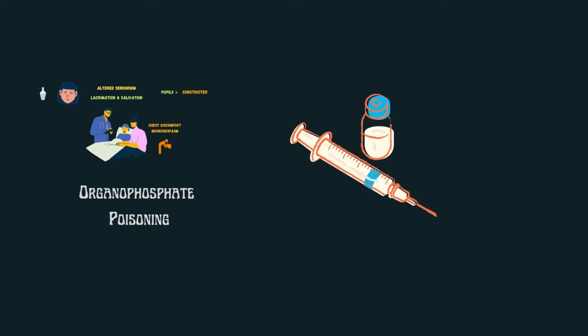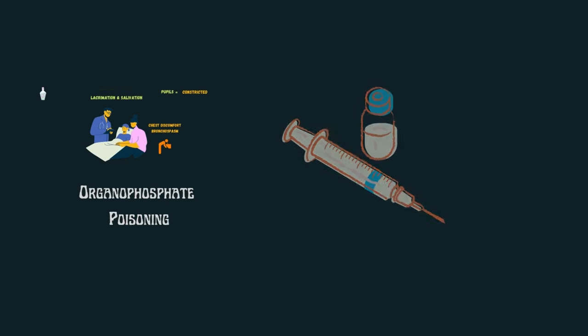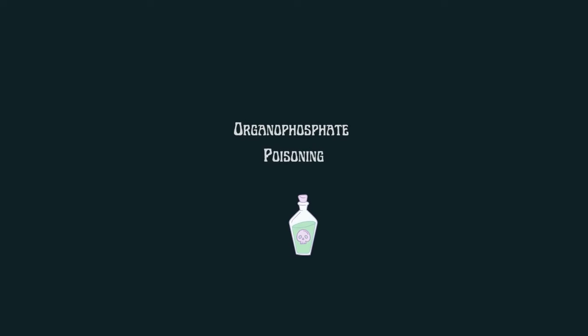The next thing you need to do is atropinize the patient. If the patient is responding to atropinization, it's confirmed. But how to do it, how to rule out organophosphate poisoning and how to manage it? Let's understand everything you need to know about organophosphate poisoning.